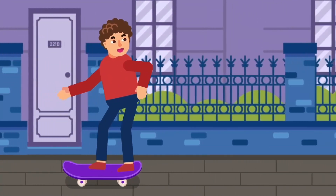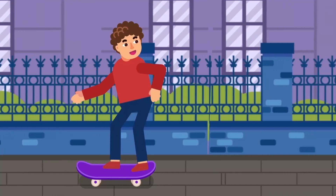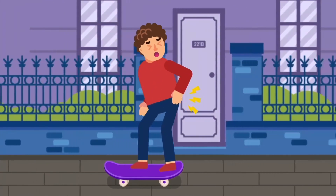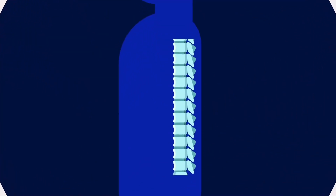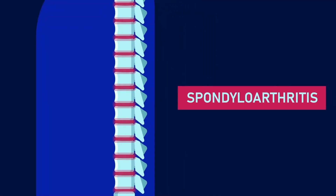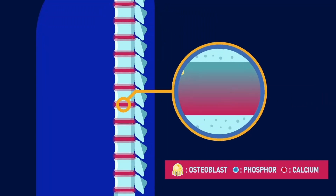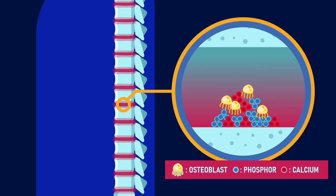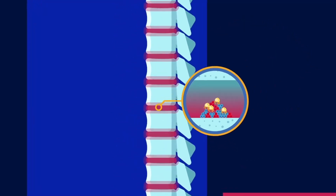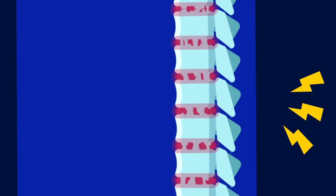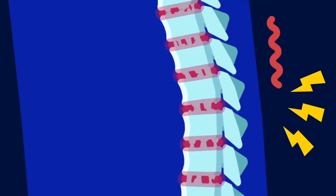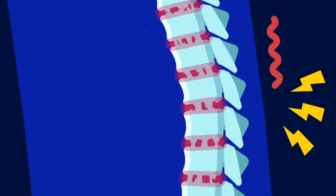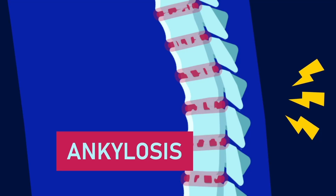Ankylosing spondylitis is an autoimmune inflammatory disease that mainly affects the spine on your back. It's a type of inflammatory condition, among others, known as spondyloarthritis. As part of the body's mechanism of inflammation, the ligament that attaches to the vertebrae receives calcium. This causes bone cells to grow from the sides of the vertebrae, and eventually the individual bones of your spine may fuse and lose flexibility. This is called ankylosis.